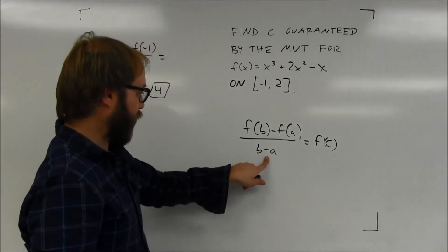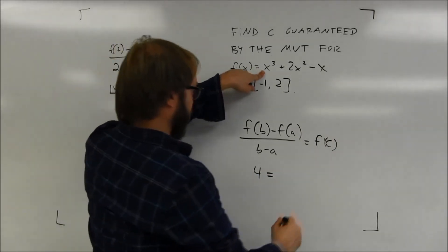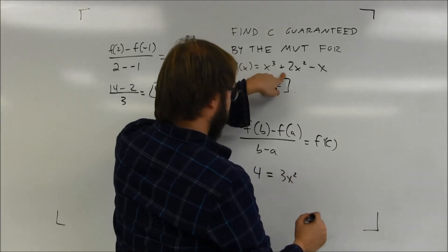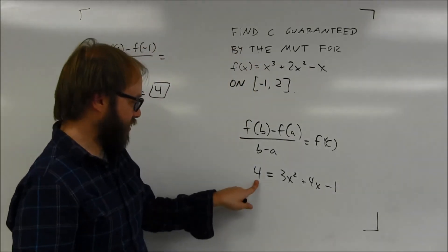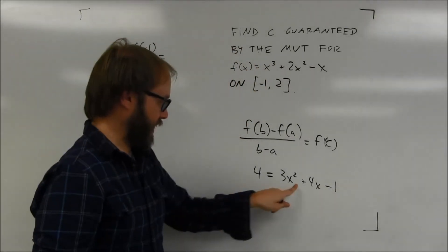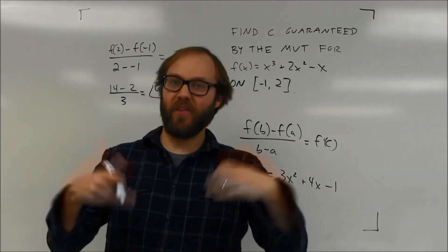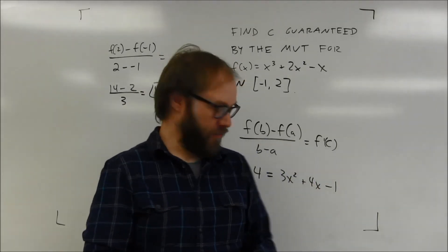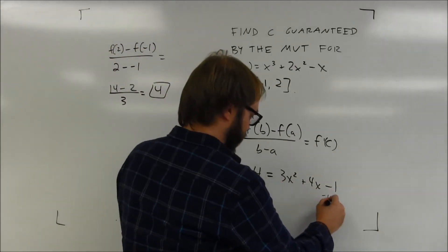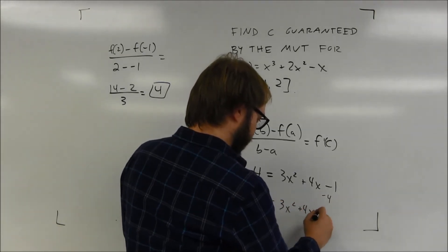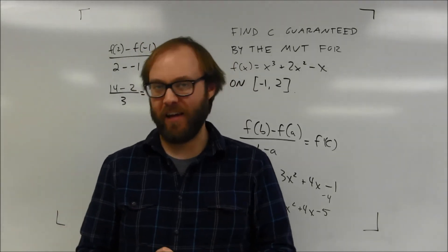We're setting that average rate of change of 4 equal to the derivative of the function. The derivative is 3x squared plus 4x minus 1. Setting 4 equal to 3x squared plus 4x minus 1, I subtract 4 from both sides to get 0 equals 3x squared plus 4x minus 5. I always try to factor first — I've tried this ahead of time and it doesn't factor, so I go to the quadratic formula.